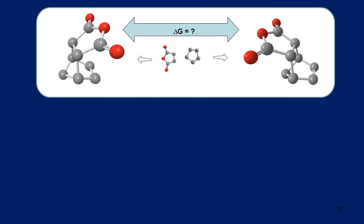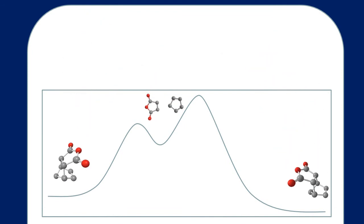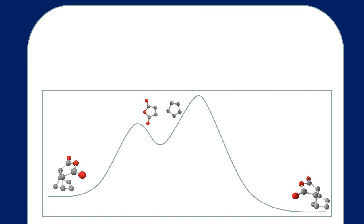The goal of our experiment this week is to determine the free energy difference between the two potential products of this reaction between maleic anhydride and cyclopentadiene. Clearly we need to come up with a situation in which we are under thermodynamic control so that we can compare the free energy difference between the products and ignore the activation energy barrier differences in those two pathways, because our goal is to determine free energy.